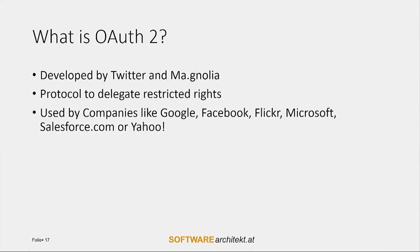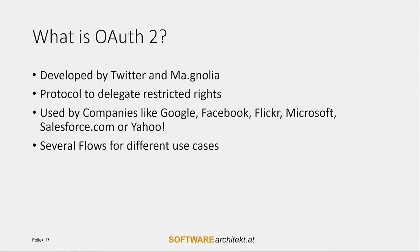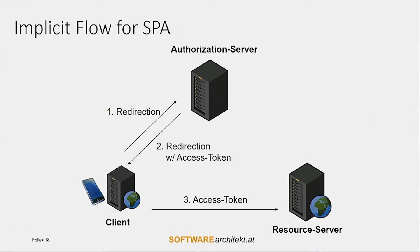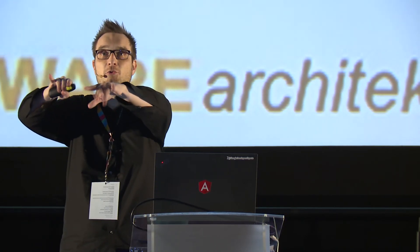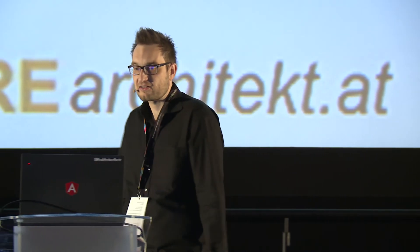OAuth2 is quite popular nowadays, adopted by Google, Facebook, Microsoft, and many others. It provides several flows covering different use cases. One important aspect: it relies on HTTPS — it is only secure when used on top of HTTPS. The flow intended for single page applications is called the implicit flow. With the implicit flow, you redirect the user to the authorization server; after login, the user is redirected back to the client with an access token, which the client then uses to access the resource server.